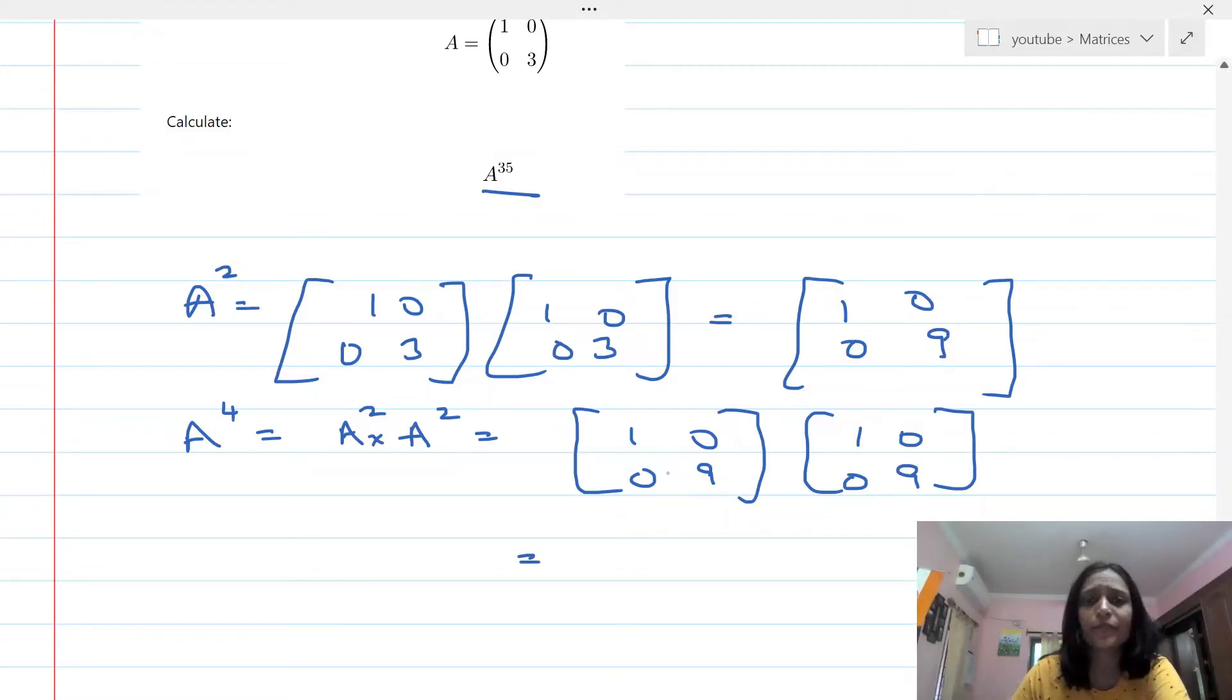The key thing that you should see over here is I'm trying to figure out a way in which I can get some type of pattern. So [1 0; 0 9] times [1 0; 0 9] is going to be: 1 into 1 is 1, 0 into 0 is 0, so this will be 1; 1 into 0, 0 into 9 will be 0, 0.